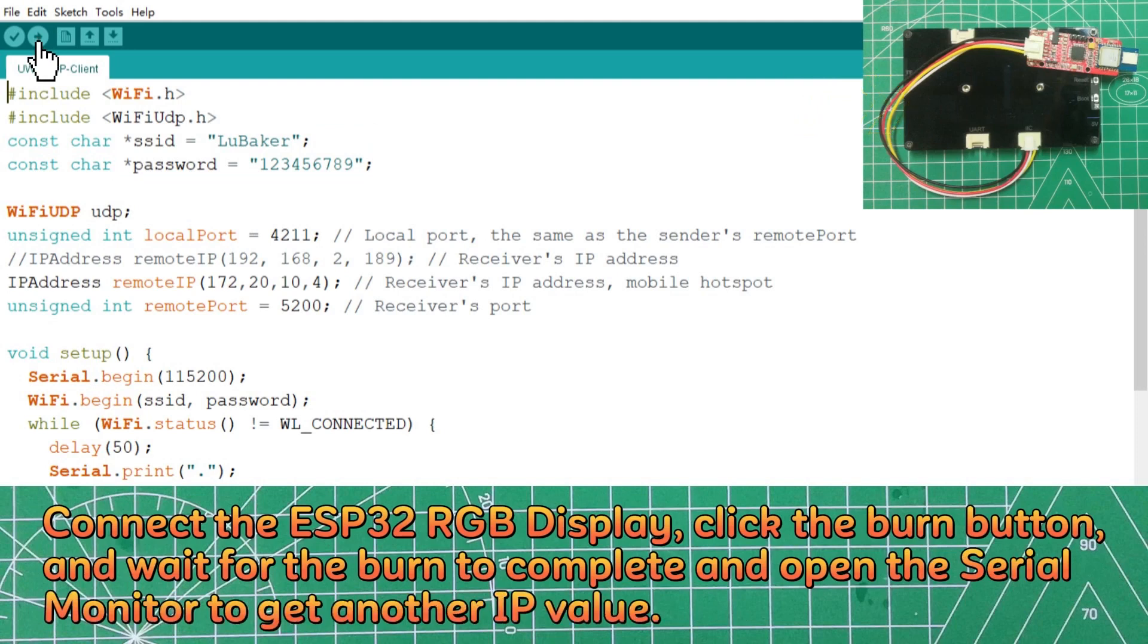Connect the ESP32 RGB display, click the burn button, and wait for the burn to complete and open the serial monitor to get another IP value.